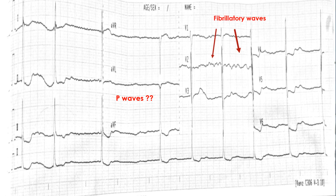What we see instead are chaotic waves. These are the fibrillatory waves of atrial fibrillation. This confirms the rhythm — this patient is having atrial fibrillation. Because of that, there are no P waves; instead, there are fibrillatory waves, and he is having an irregularly irregular rhythm. Always try to see the P waves first, and if you cannot see them, then look for other evidence such as fibrillatory waves, as in this case.